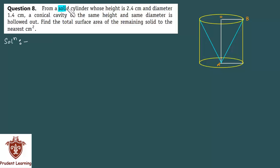From a solid cylinder whose height is 2.4 cm and diameter 1.4 cm. In this question you have a solid cylinder whose height is 2.4 cm and diameter 1.4 cm.